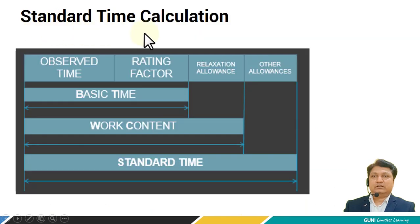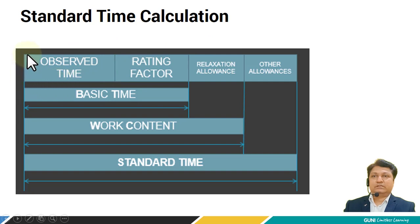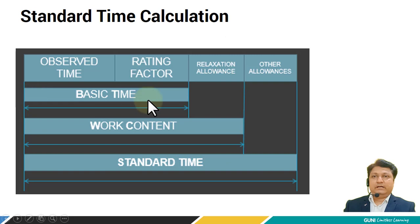Now let's see the chart showing how standard time can be calculated. The observed time is calculated by taking the average of various observations. If we multiply by the rating factor, then we will get the basic time. After finding the basic time, we can add the various allowances.